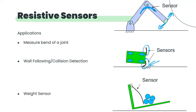You can also mount the bend sensor on a weighing system — put your weight here, with the weight the sensor bends, and based on that you can get some idea about the weight of a package. These are the resistive sensors — the bending sensors.